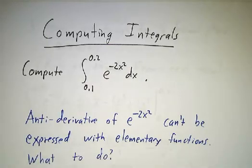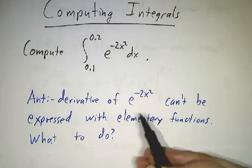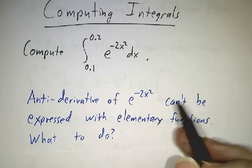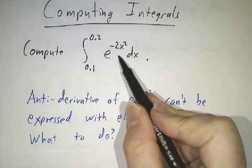There is no function that you can write down in elementary terms. There's no expression involving exponentials, logs, trig functions, inverse trig functions, polynomials, etc., whose derivative is e to the minus 2x squared.